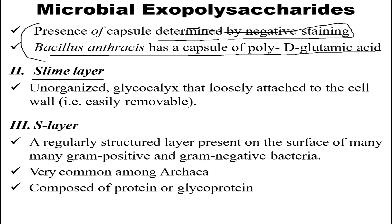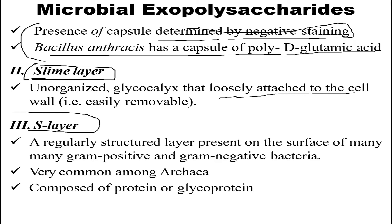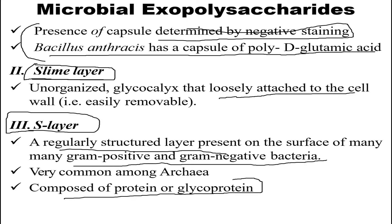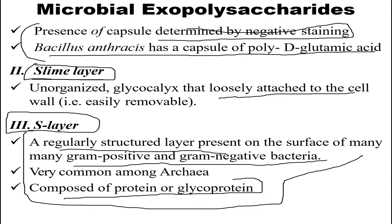The slime layer is an unorganized glycocalyx loosely attached to the cell wall, and it is very easily removable. The S layer is a regularly structured layer present on the surface of many gram-positive and gram-negative bacteria; it is very common among Archaea and is composed of protein or glycoprotein.